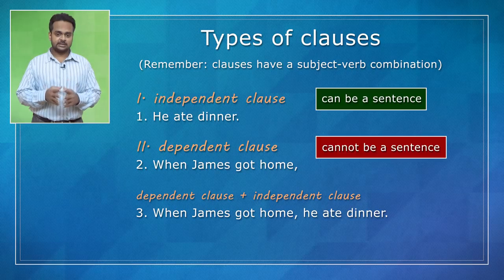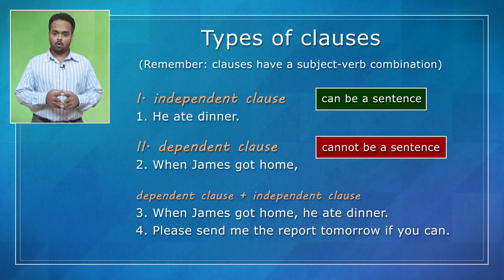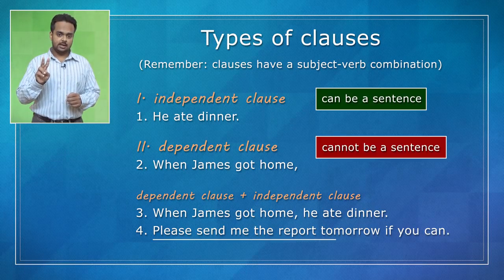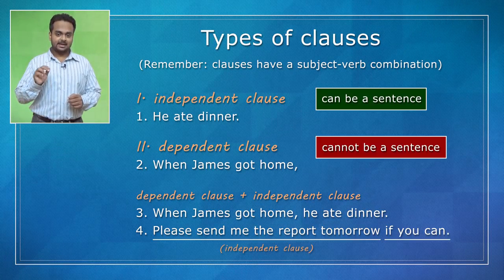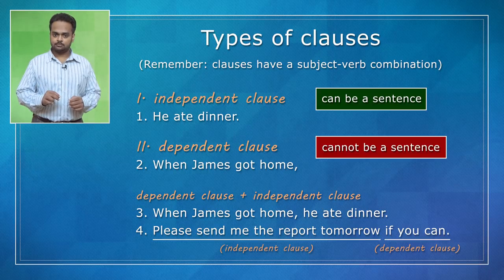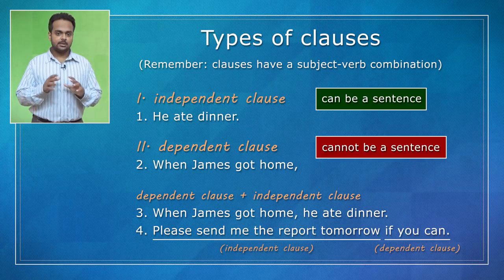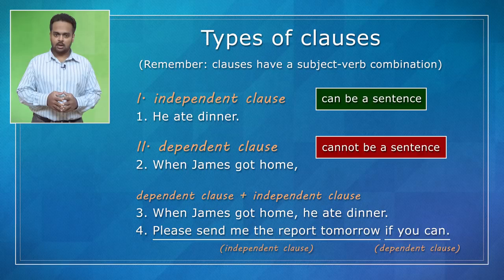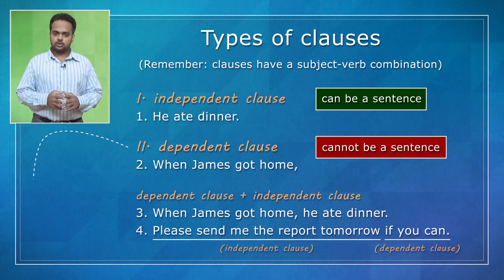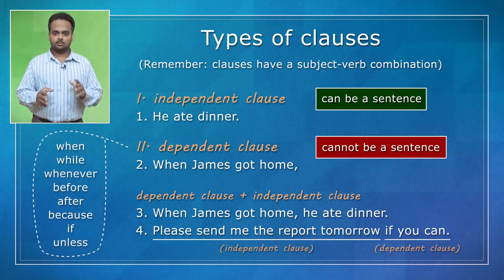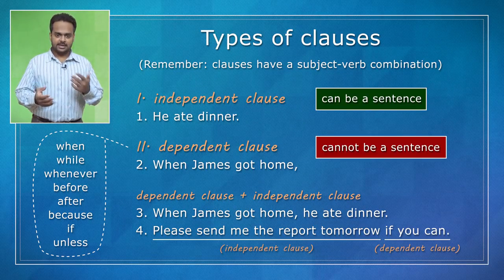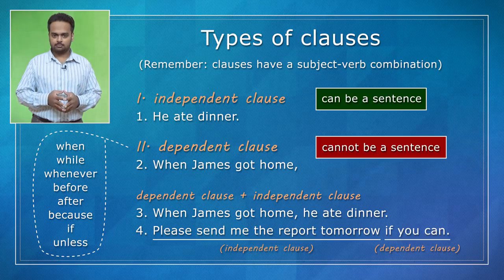In this next example: 'Please send me the report tomorrow if you can.' This sentence has two clauses. The first clause is independent: 'please send me the report tomorrow.' And the second clause is dependent: 'if you can.' Usually dependent clauses will have words like when, while, whenever, before, after, because, if, unless, and so on.